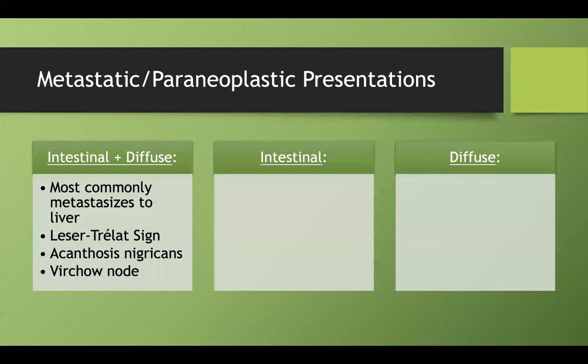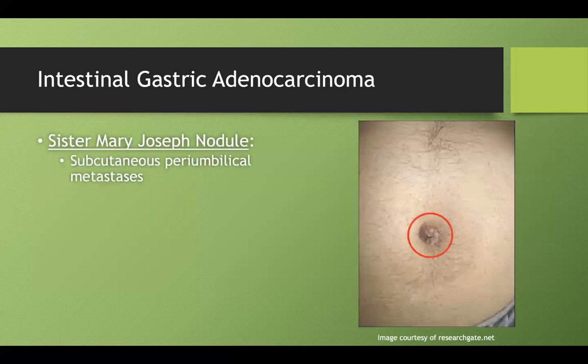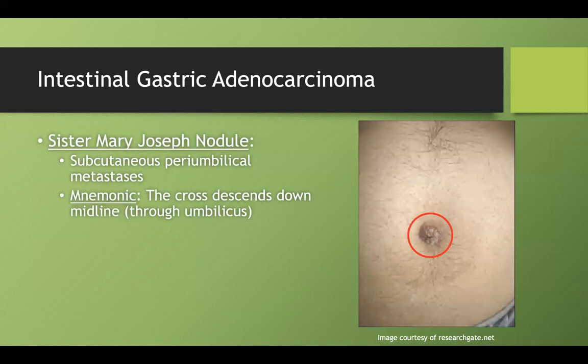Now let's cover paraneoplastic presentations exclusive to each subtype. The intestinal subtype can present with the Sister Mary Joseph nodule — a subcutaneous peri-umbilical metastasis appearing around the belly button. A helpful mnemonic: Sister Mary Joseph is very religious, and thinking of a cross going straight down the midline through the umbilicus helps you remember this peri-umbilical location.